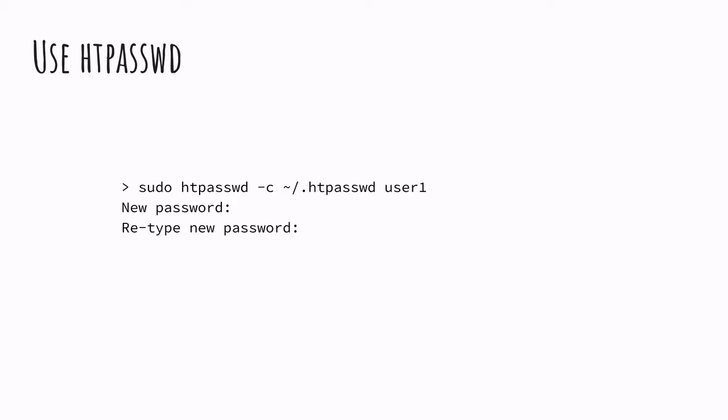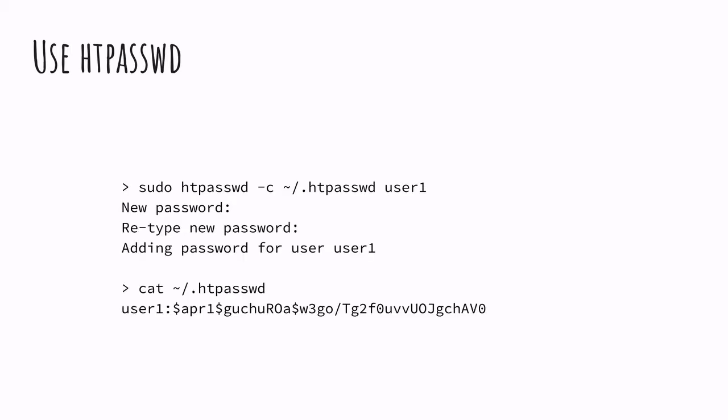Once we set the password, it gets hashed and saved in the file together with the username. This file can then be used by Nginx to provide basic authentication, and this is what we're going to see on the second part.